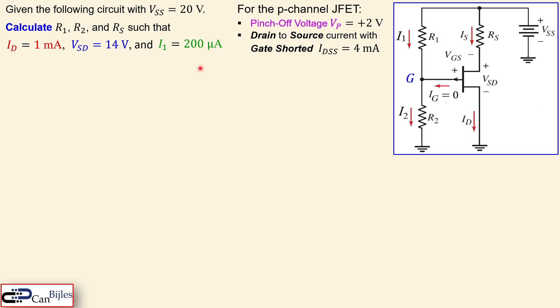This is a design example where we need to calculate resistors R1, R2, and RS. The given conditions are: the drain current ID must be 1 mA, the voltage VSD between source and drain must be 14 volts, and the current I1 flowing through R1 must be 200 microamps. Those are the design specifications for this P-channel JFET circuit.